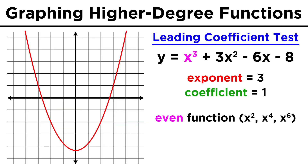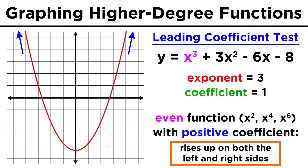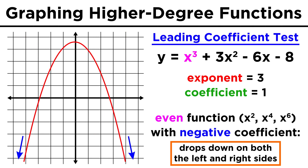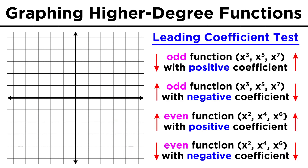Then, if the exponent is even, such as with quadratic or quartic functions, or ones beginning with X to the sixth, X to the eighth, and so on: if the leading coefficient is positive, the function will rise upwards on both sides. If the leading coefficient is negative, the function will fall downwards on both sides. So those are the four possibilities in terms of the end behavior of higher degree polynomials.